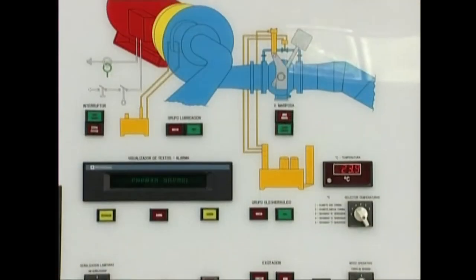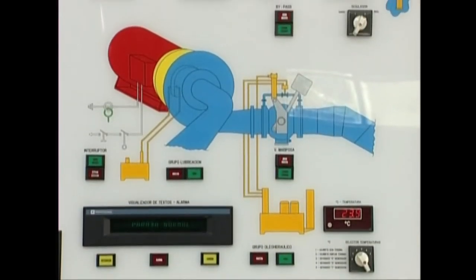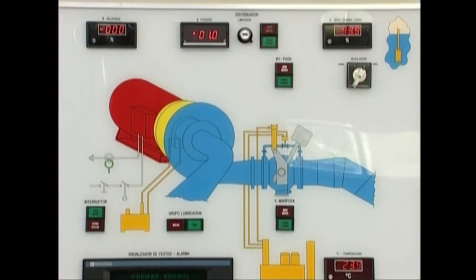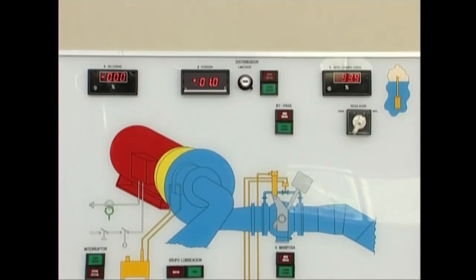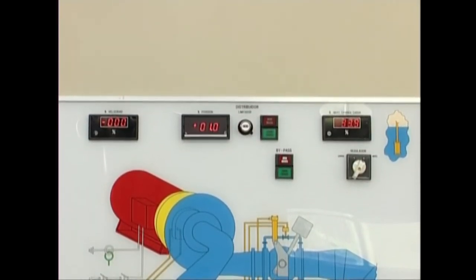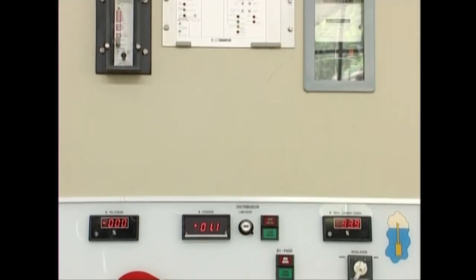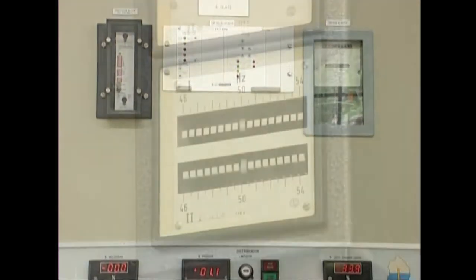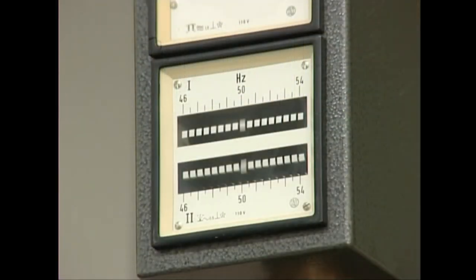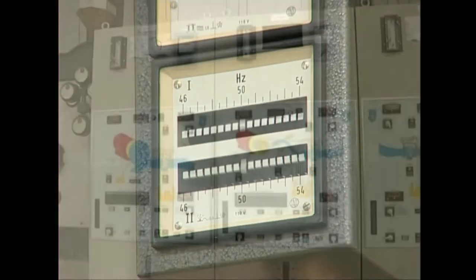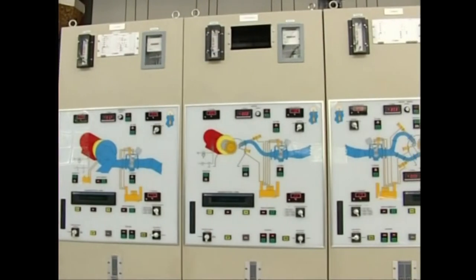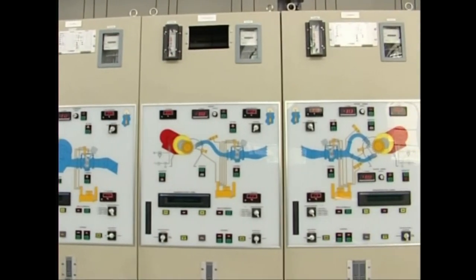Hori ez gain, zentralaren barruan sorkuntza kontrolatzea arduratzen diren ekipo elektronikoak ere izaten dira. Horien zeregina babesak, kaldagaiak eta sorkuntzaren segurtasuna kontrolatzea da.